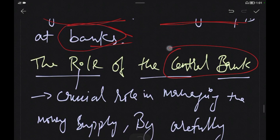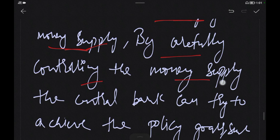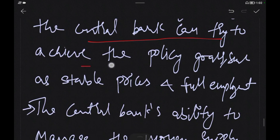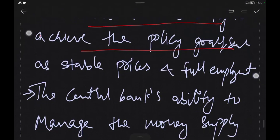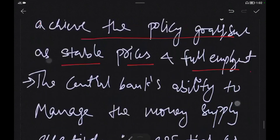The central bank plays a crucial role in managing the money supply. By carefully controlling the money supply, the central bank tries to achieve its policy goals, such as stable prices and full employment. Stable prices support the middle class and full employment in the economy.